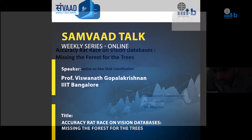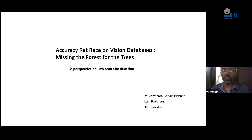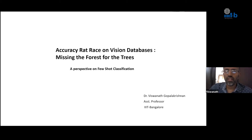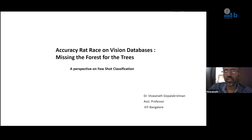Thanks for the introduction. Welcome everyone to the talk. As the title suggests, I will be discussing certain works that have happened in the domain of few-shot classification, and more critically examining these works — they have reported a lot of improvement in accuracies on certain databases. So what is the actual fact here? What has actually contributed to the work and how has it helped in improving the accuracies? And are we missing some big picture here? This is the gist of my talk.